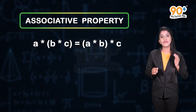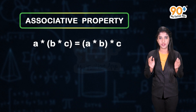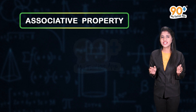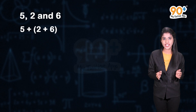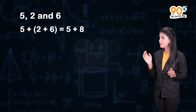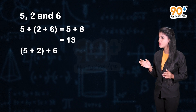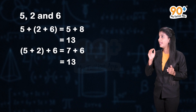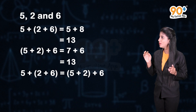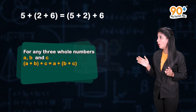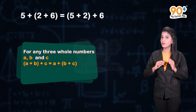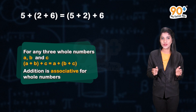First, let us find out whether the set of whole numbers satisfies associative property under addition, subtraction, multiplication and division. Let us consider three whole numbers 5, 2 and 6. What is (5 + 2) + 6? That is equal to 5 + 8, which is equal to 13. Now, what is 5 + (2 + 6)? That is equal to 7 + 6, which gives 13. Here, we can see that (5 + 2) + 6 = 5 + (2 + 6). So in general, for any three whole numbers a, b and c, (a + b) + c = a + (b + c). So we can say that addition is associative for whole numbers.